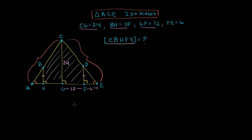Because we've been talking a lot about similarity, we can make a similarity argument here. Triangle CGE shares an angle with triangle DFE — they both share this orange angle, and they both have this right angle. So they have two angles in common and are similar by angle-angle. You can also show a third angle is in common because those two lines are parallel.